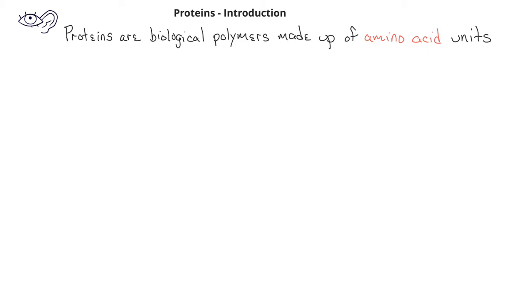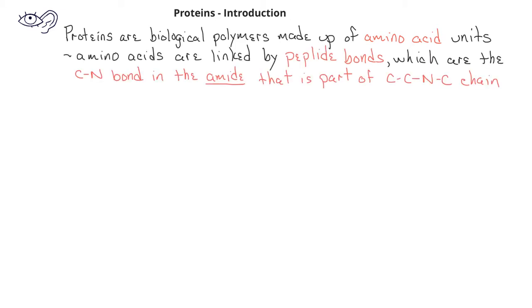The amino acid units are linked by what are known as peptide bonds. The peptide bond is the carbon-nitrogen bond in an amide functional group that is part of a repeating carbon-carbon-nitrogen-carbon chain.